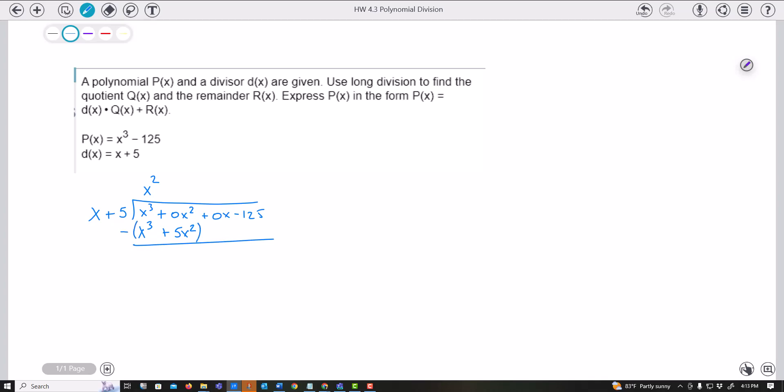So that of course cancels. This becomes negative 5x squared. And then I bring down my plus 0x. Now I look to see my x. How many times will it go into negative 5x squared? I believe that would be negative 5x because negative 5x times x would be my negative 5x squared. And now I multiply negative 5x times 5, which gives me negative 25x.